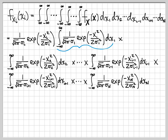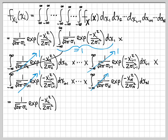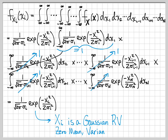These integrals are actually pretty easy, because all we have in each integral is just a Gaussian density function being integrated from minus infinity to infinity. For example, x_1 is just a Gaussian random variable with mean 0 and variance sigma_1 squared, so this integral is just 1. The same is true for the integral over dx_2, and each remaining integral is also just 1. So when we're all said and done, after integrating everything out, we are left with just 1 over 2 pi sigma_i times e to the minus x_i squared over 2 sigma_i squared. This tells us that x_i is a Gaussian random variable with mean 0 and variance sigma_i squared.